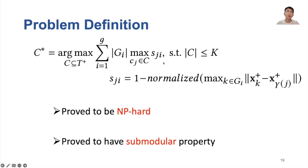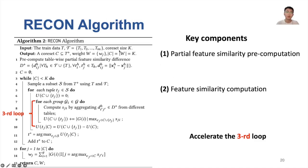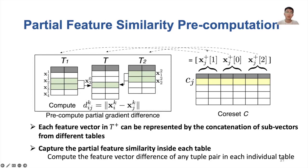The proposed method can compute this similarity efficiently, thus reducing the coreset selection time. Here is an overview of our proposed RECAN algorithm. It accelerates the computation in the third for loop. To obtain such acceleration, it first pre-computes the feature similarity in each individual table. After that, during the coreset selection, the feature similarity computation can be accelerated by simply aggregating its partial results.